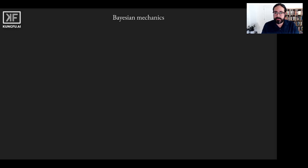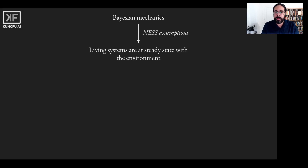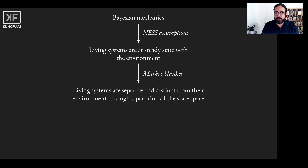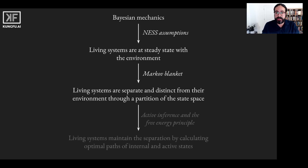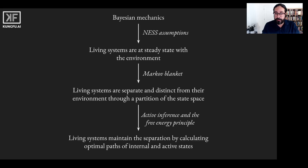Now let's take a step back and summarize. Bayesian mechanics uses stochastic differential equations to describe the physics of living systems. Living systems maintain themselves in a characteristic set of states over time, in a steady state with the environment, implying they exist as separate and distinct from their environment. The boundary separating a living system from its environment is statistical in nature, known as a Markov blanket. To maintain this boundary and resist entropic decay, living systems use a brain or some internal model of their external environment to predict and perceive how it will change over time, and can adapt and sculpt their environment through actions. Together, this is known as active inference, which relies on the free energy principle, accomplished through the minimization of variational free energy. Those that adapt successfully thrive and survive; those that do not lose their Markov blanket and become indistinguishable from their surroundings.